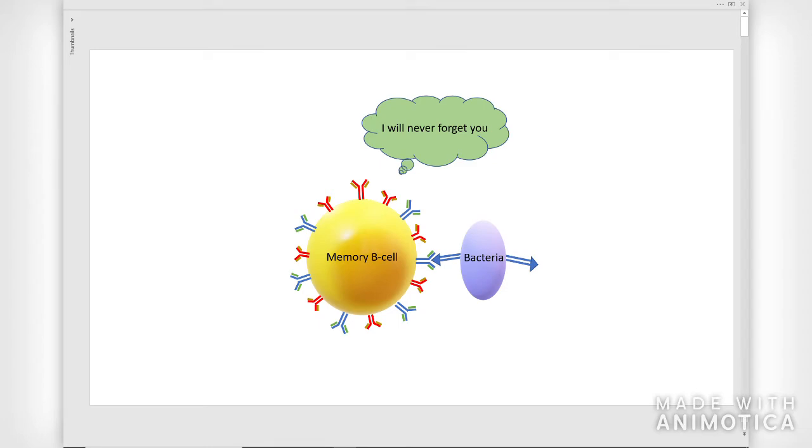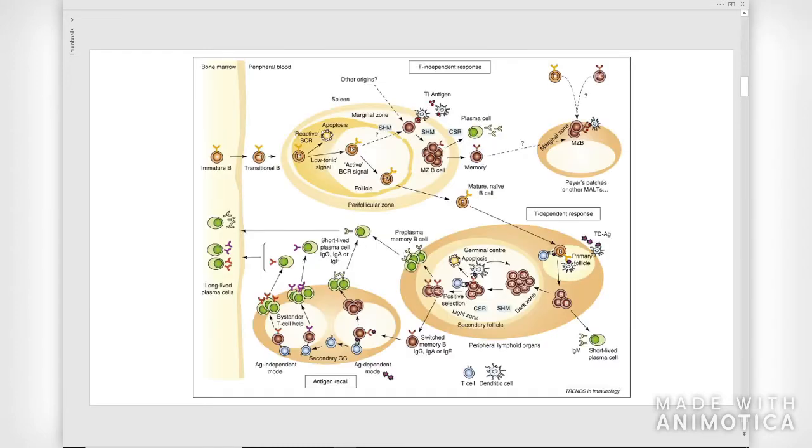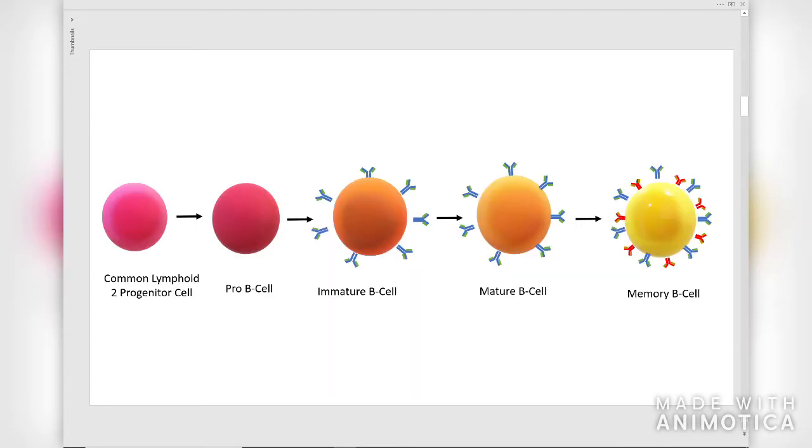With such high specialization, memory B cells undergo an extremely complicated development, as illustrated in this diagram. However, this process can be generalized in five stages.